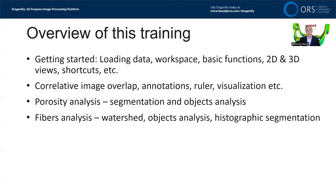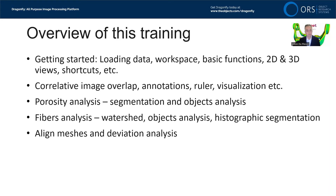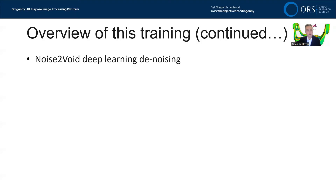Then I'll cover fiber analysis — a nice way to demonstrate how to separate touching objects like touching fibers using watershed tools — along with objects analysis and histographic segmentation, which is a special method of viewing and segmenting using multiple histograms simultaneously. I'll then discuss mesh alignment and deviation analysis between meshes, also called CAD-to-part or CAD analysis. Then we'll move to vector fields, which is a way of visualizing the directionality of a sample, and then into deep learning.